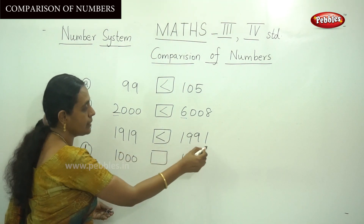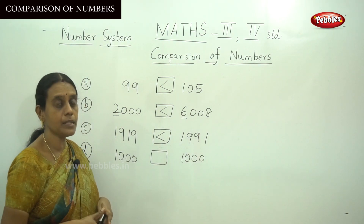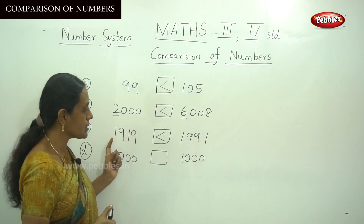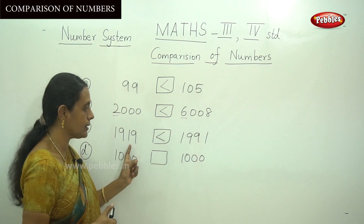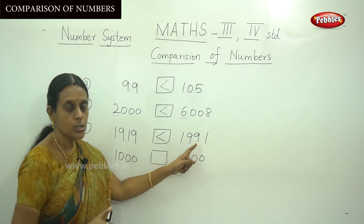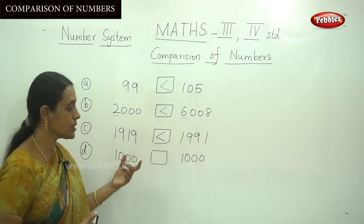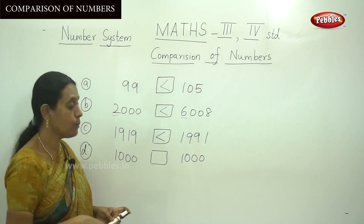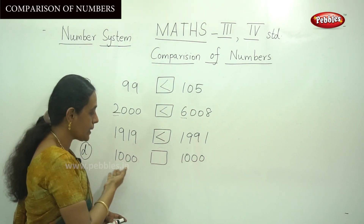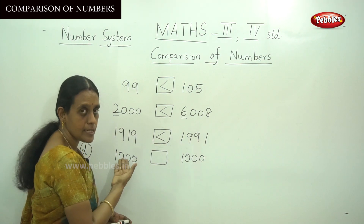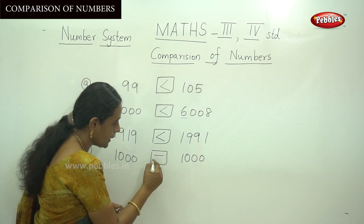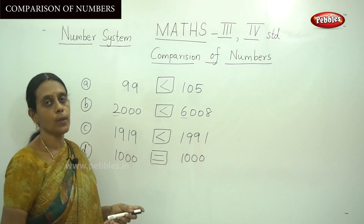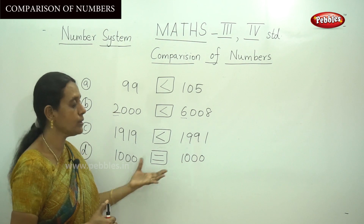Read the number carefully by moving from left to right. For the next sum: 1000 and 1000. Both numbers have four digits and all digits are identical on both sides. So put the equal sign — 1000 equals 1000 — showing equality of the numbers on both sides.